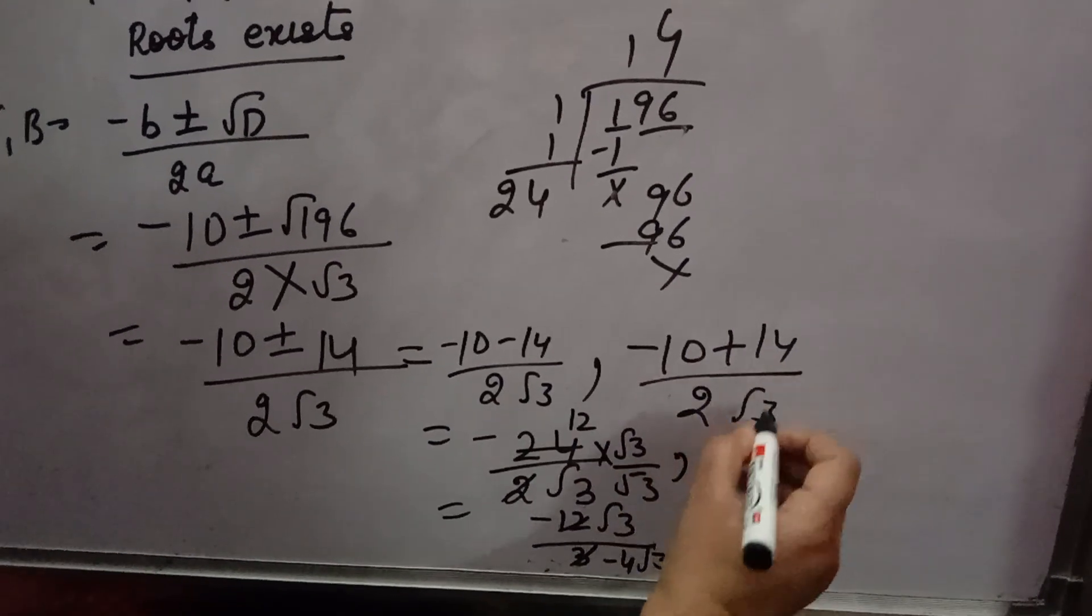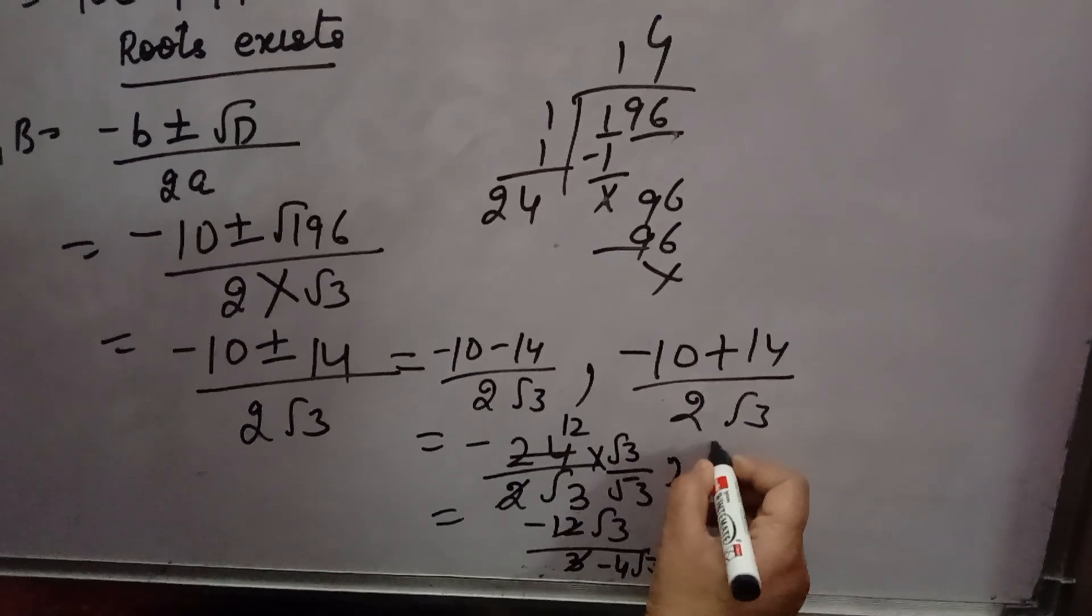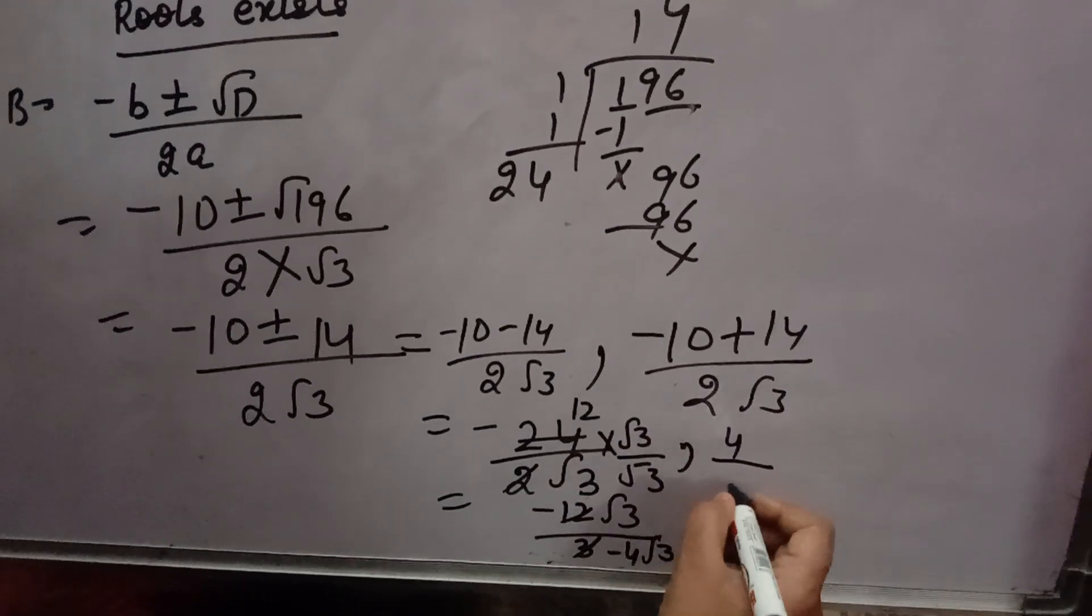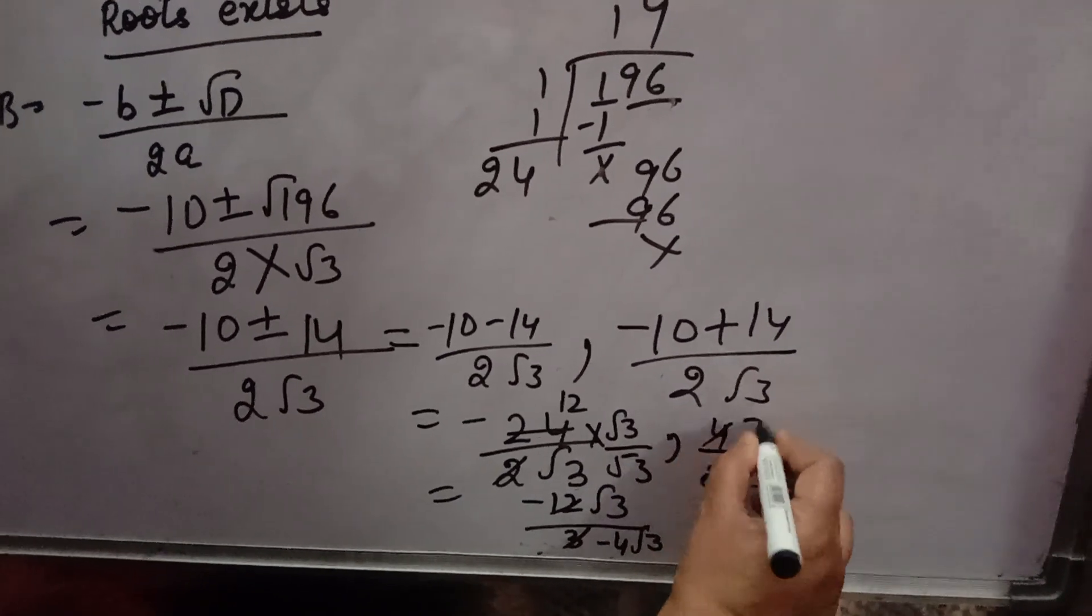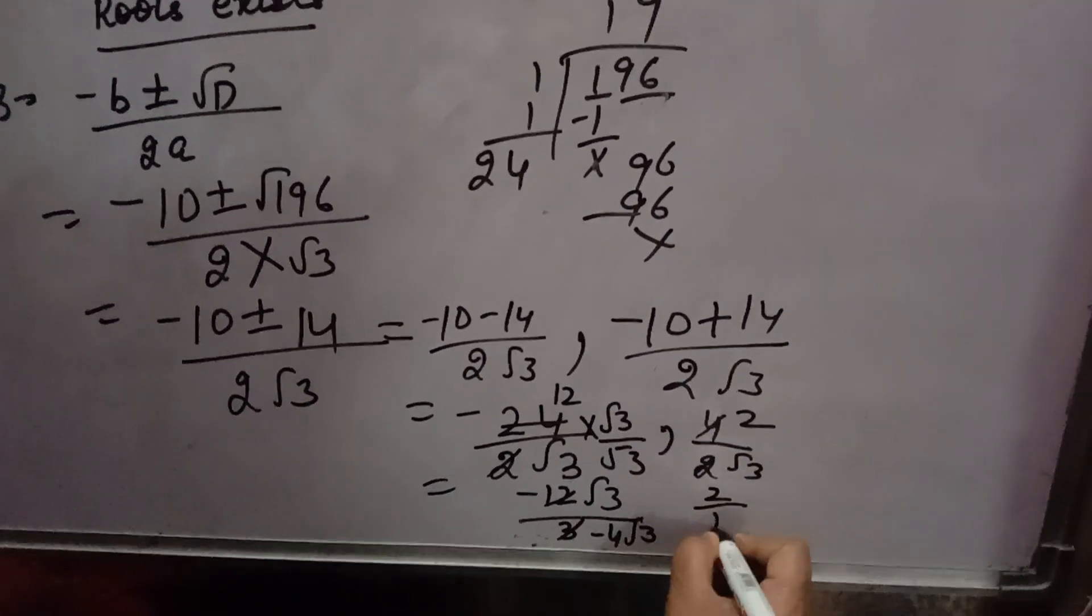Now, this one. Minus 10 plus 14. What will come? 4. Because one is minus, one is plus. You will subtract. Sign of bigger. So, 4, 2 root 3. 2 into 2 is 4. Further, you will rationalize.